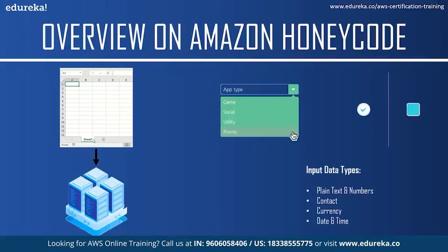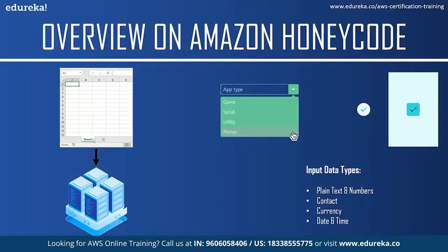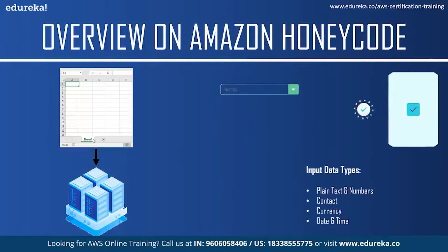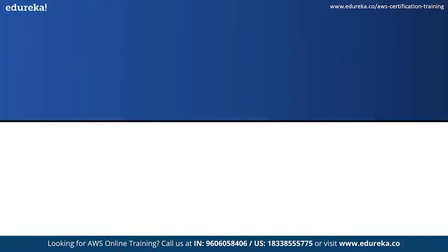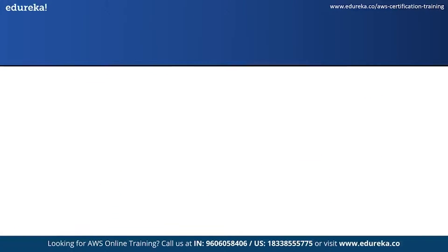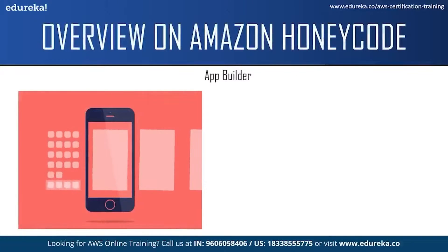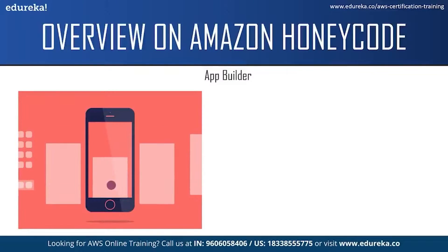Your data format can be text, number, contact — which includes name, phone number, and email ID — or it can be currency, percentage, or date and time. The next part of Amazon Honeycode is the app builder, which is used to build your application screens or the user interface.